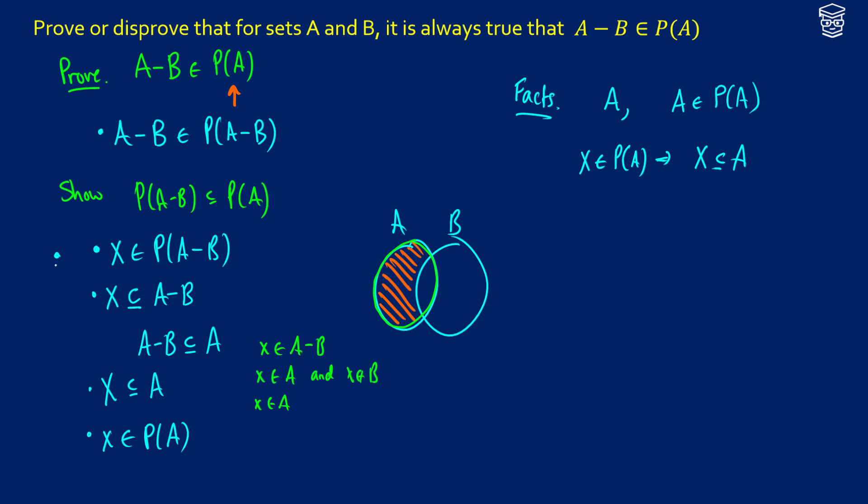So we've said that if X is an element of the power set of A minus B, we're going to get that X is an element of the power set of A. Therefore, we have now shown this part.